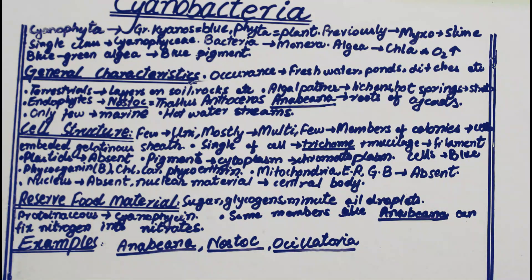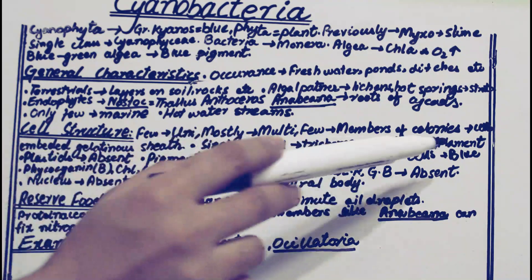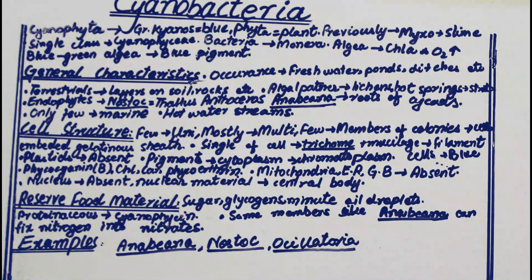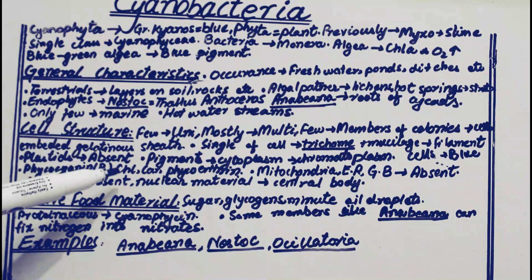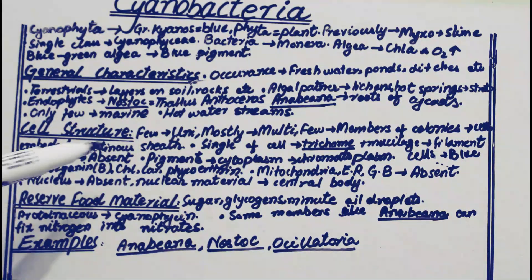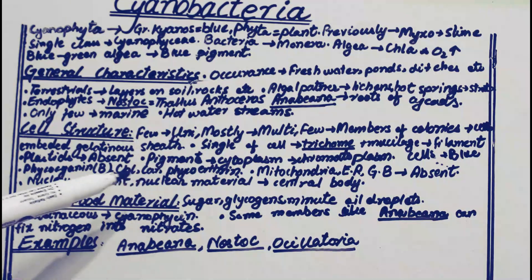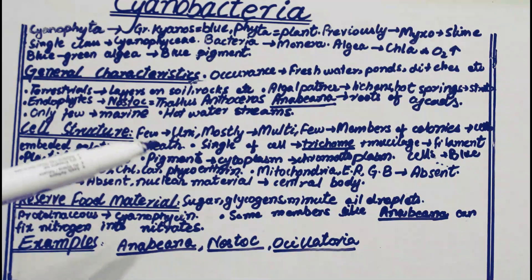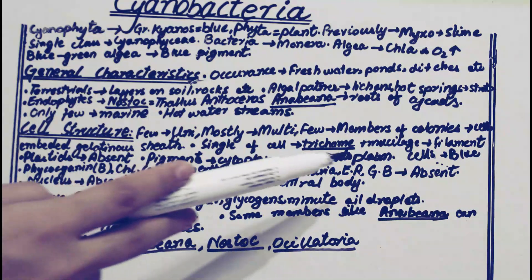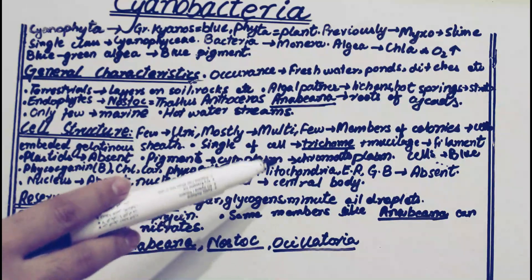The most distinctive characteristic of cyanobacteria is their blue color due to the presence of blue pigments. The exact name of the blue pigment is phycocyanin. They also have chlorophyll-a, carotenoids, and phycocyanin — so they have different types of pigments including green, red, and blue.